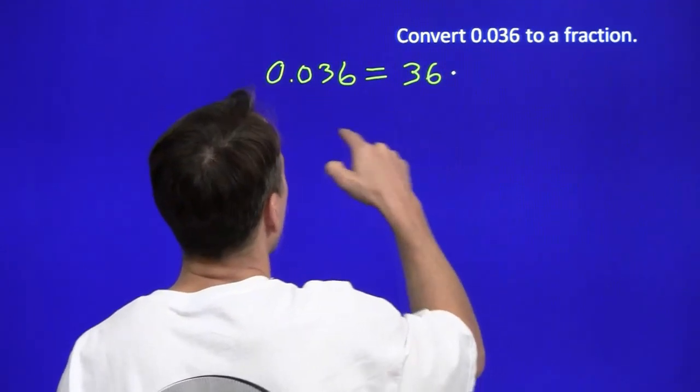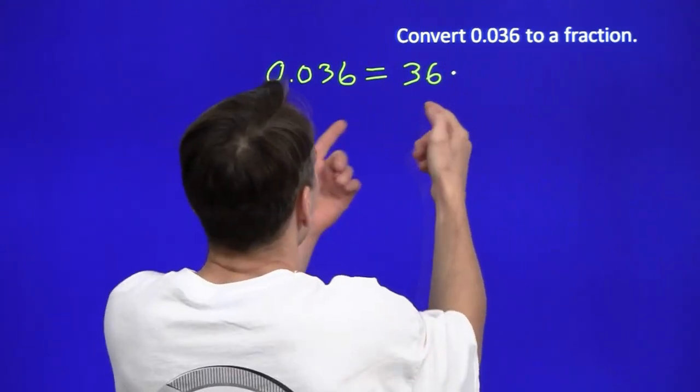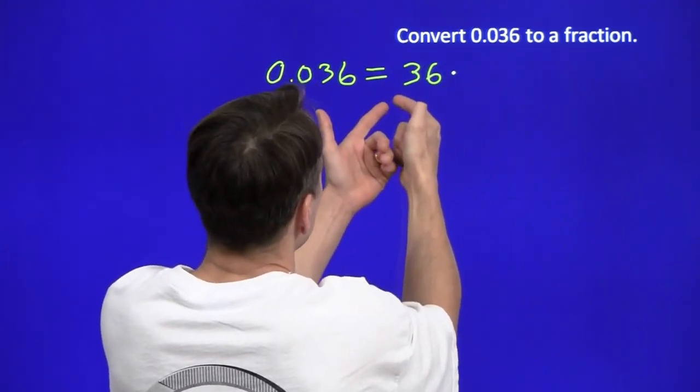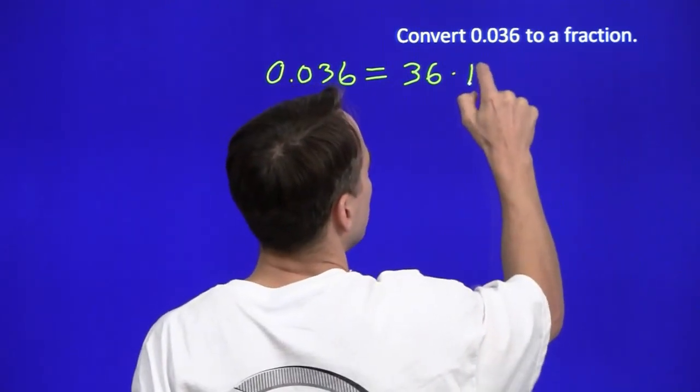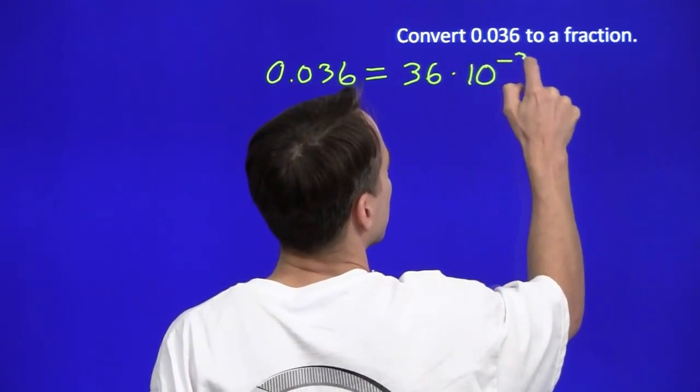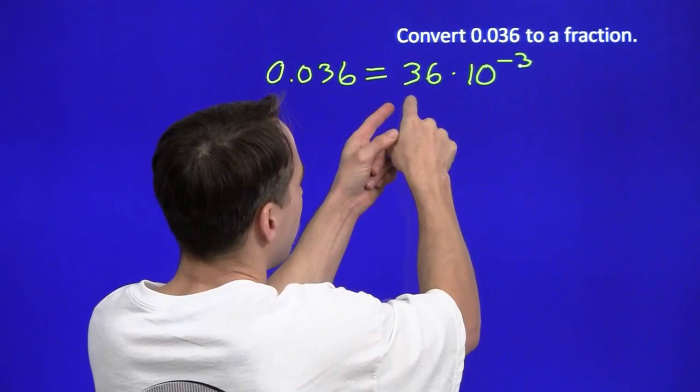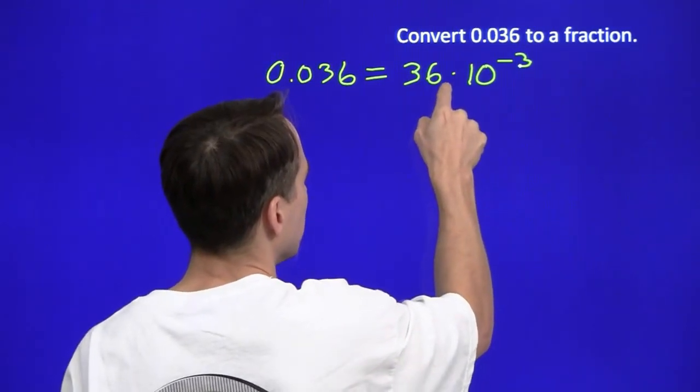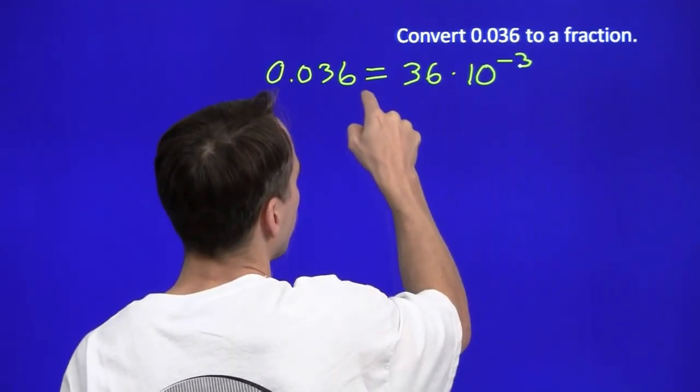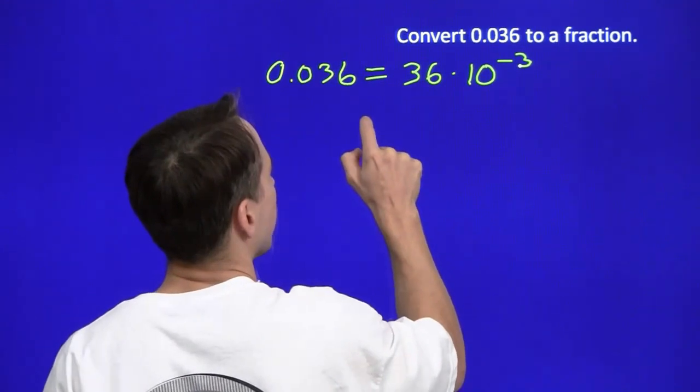I'll write this as 36 times - I'm moving the decimal. I want to move the decimal three places to the left to make 0.036, so I need to multiply this by 10 to the minus 3. Let me check that again. 36 times 10 to the negative third, that means the decimal point goes 1, 2, 3 places. Okay, we got it. 0.036.